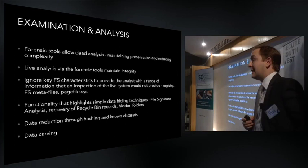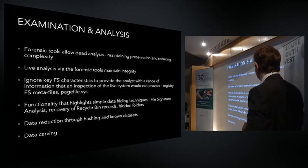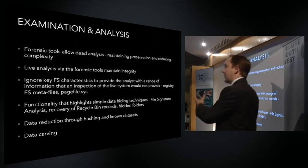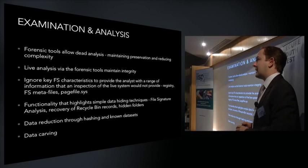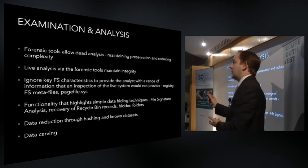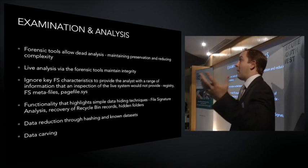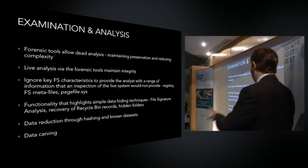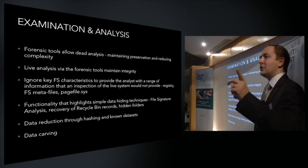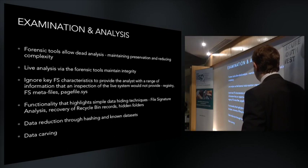Forensic software also has functionality that highlights simple data hiding techniques. Something called file signature analysis addresses an old approach — thinking of child pornography investigations, one of the main reasons law enforcement does digital forensics. People would try to circumvent detection by simply changing the extension of a file from JPEG or GIF to text or doc, thinking the forensic examiner won't find it as an image. Forensic software ignores the extension and looks at the header information, and will flag any case where the extension doesn't match the header.